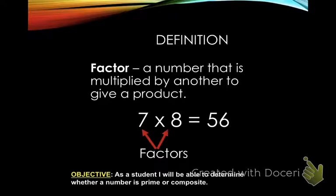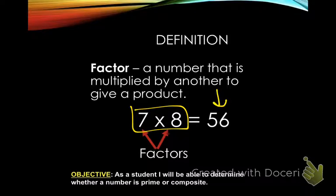So if you look down here at seven and eight, seven and eight are two things that you multiply together to get the number 56. Seven and eight are the factors. There are other ones for this number — you could also use two and 28, or 14 and four. Those are all factors of 56.